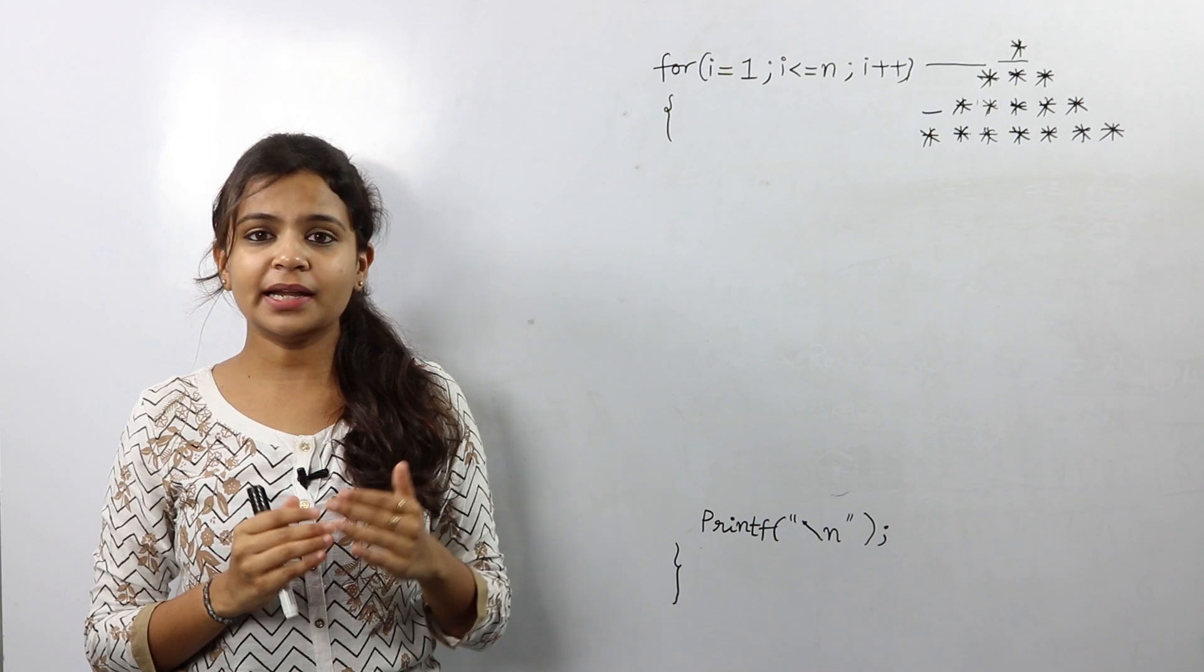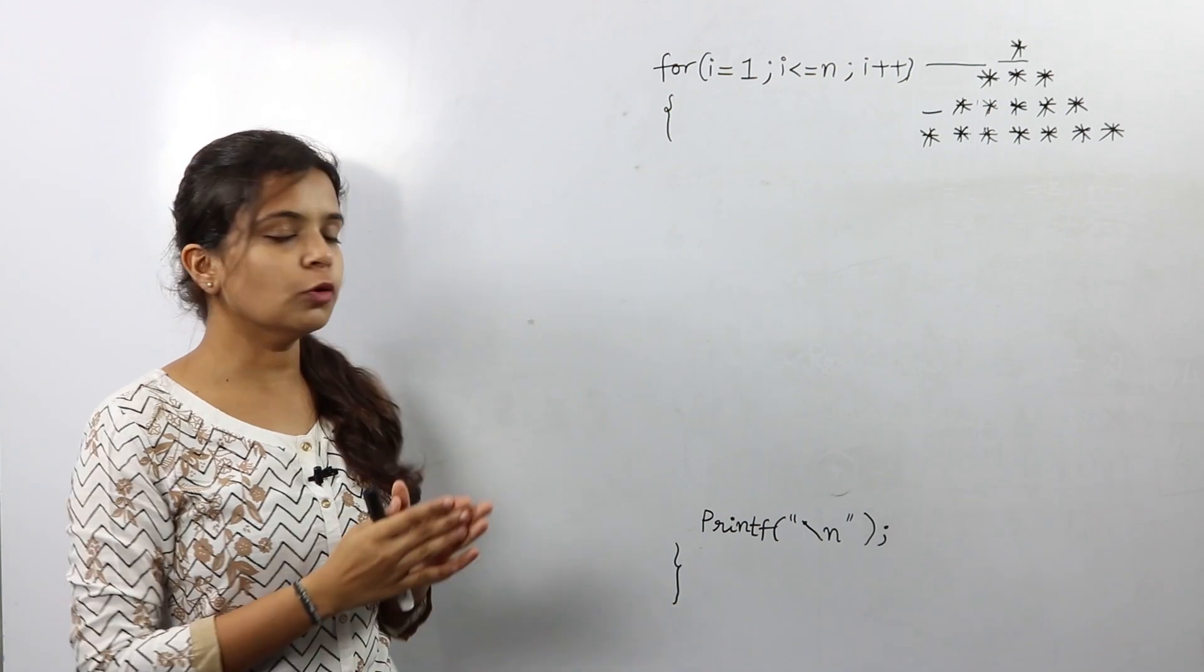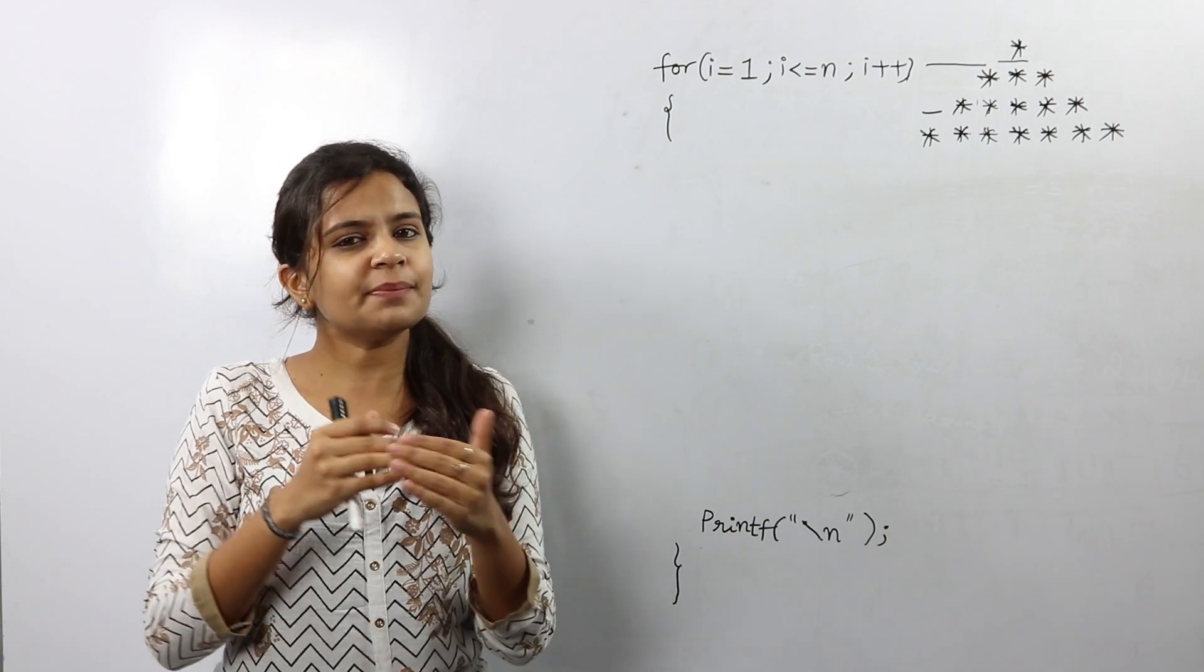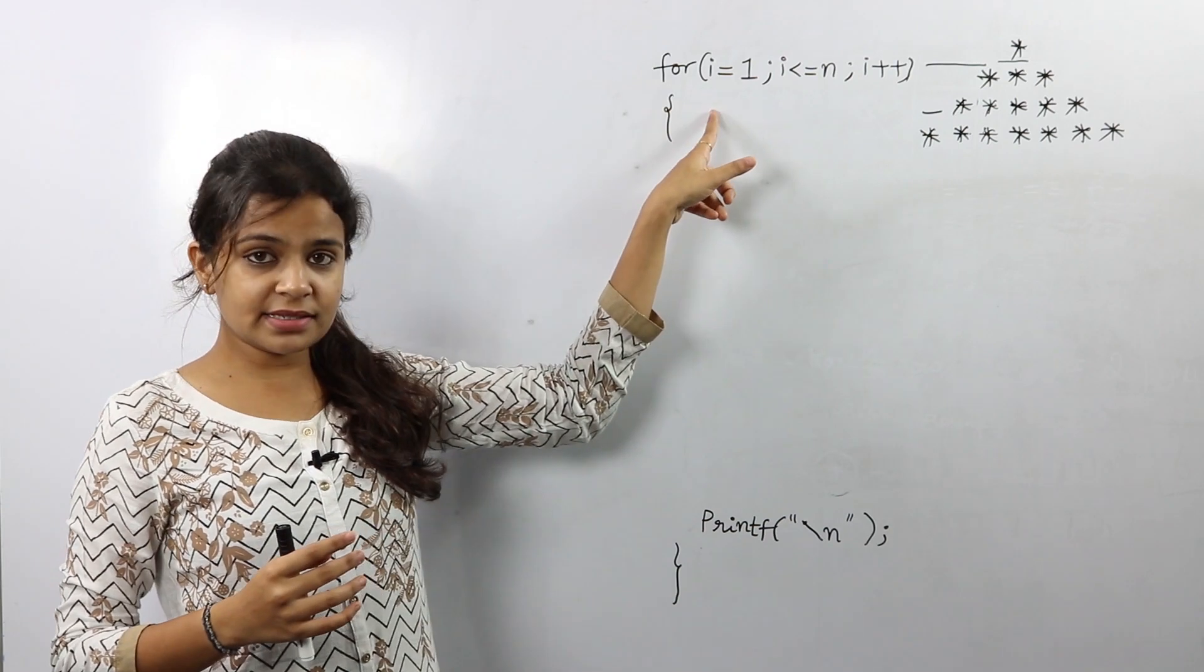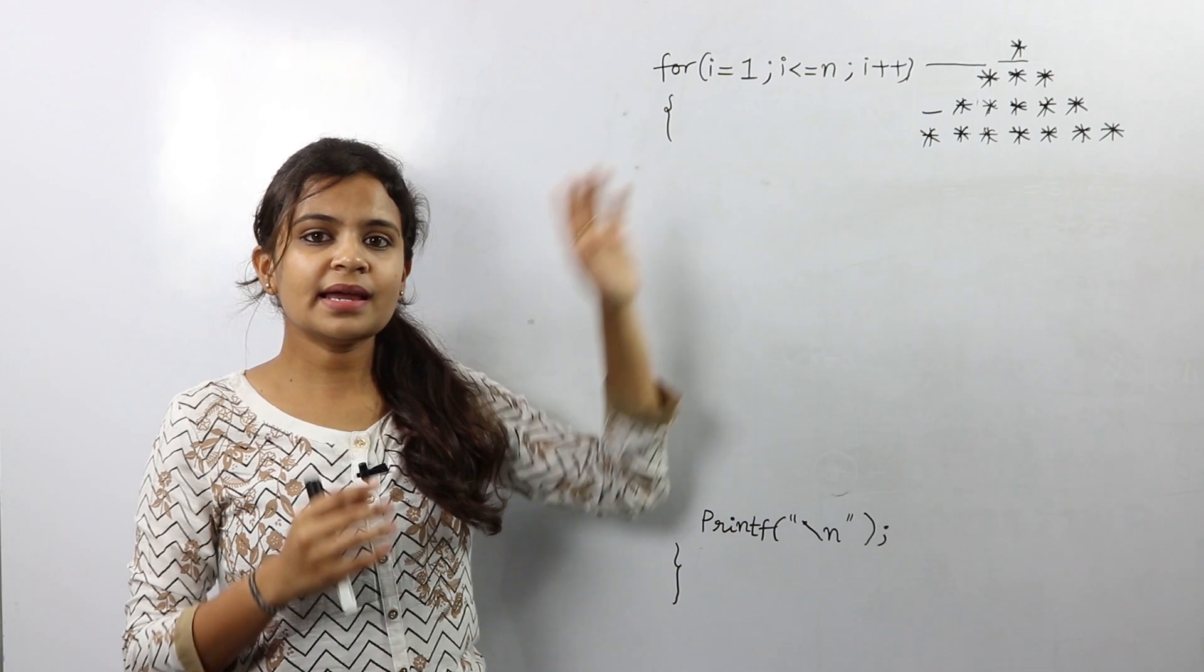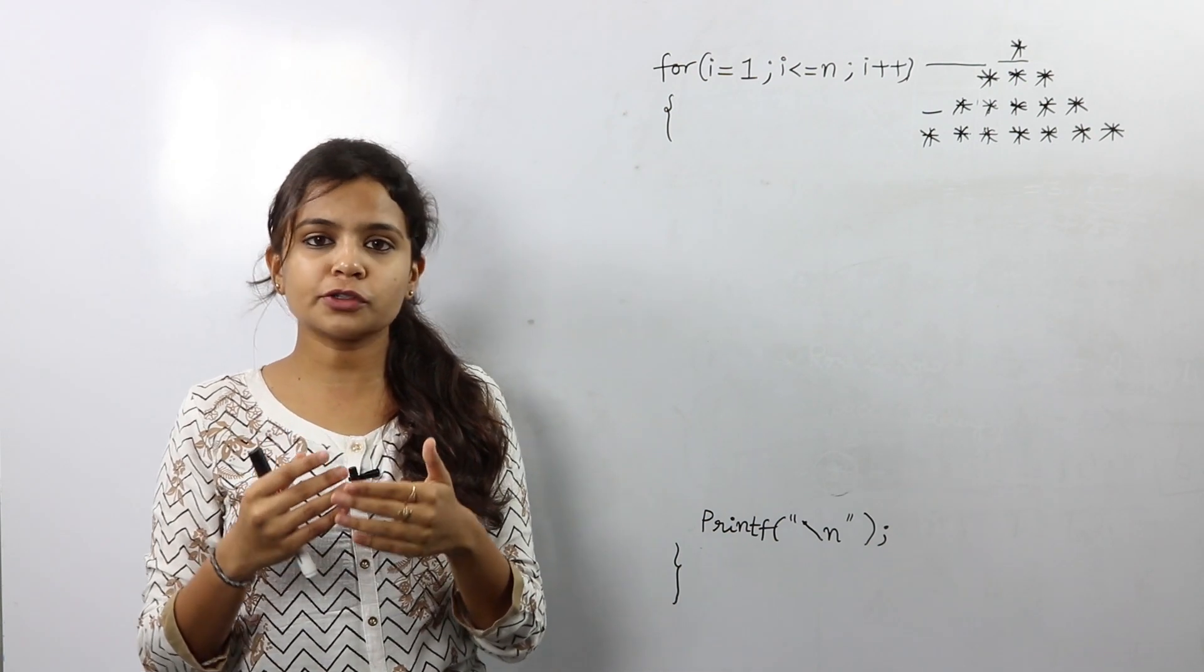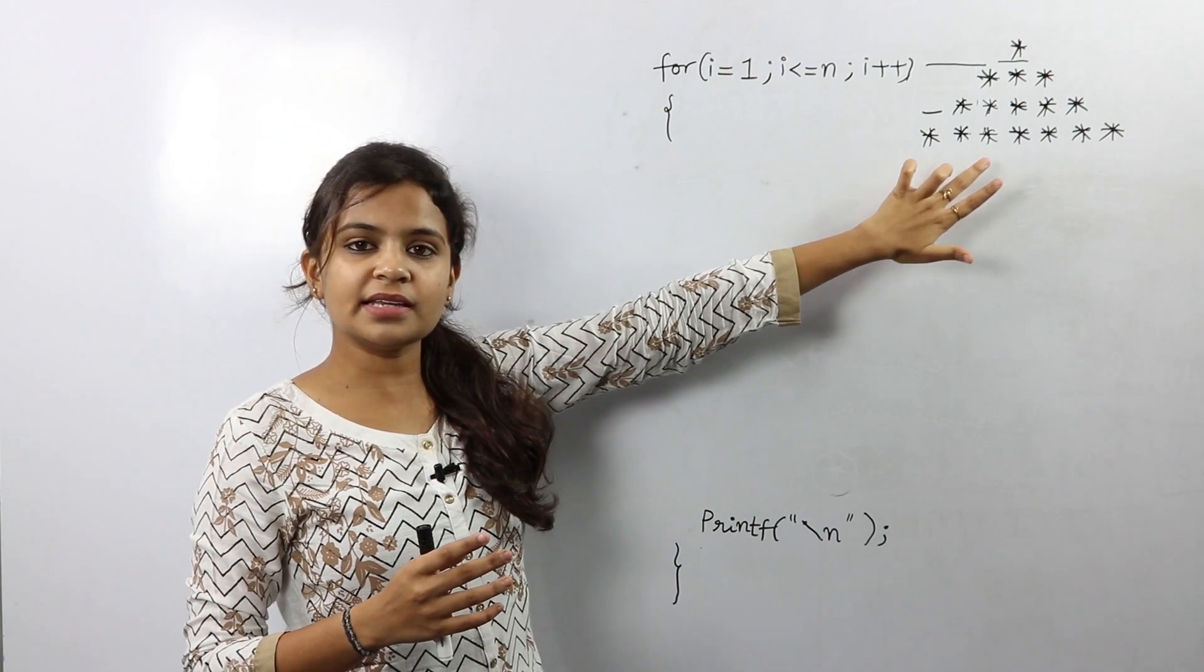So now let's get started with writing down the logic step by step. I have already written the outer for loop which is nothing but the ith loop. The purpose of the ith loop is to simply iterate from row to row. So as discussed, it goes from i is equal to 1 to i less than or equal to n. n here is a number inputted by the user. It is basically the number of rows of stars to be printed. For example, in this case our n is equal to 4.